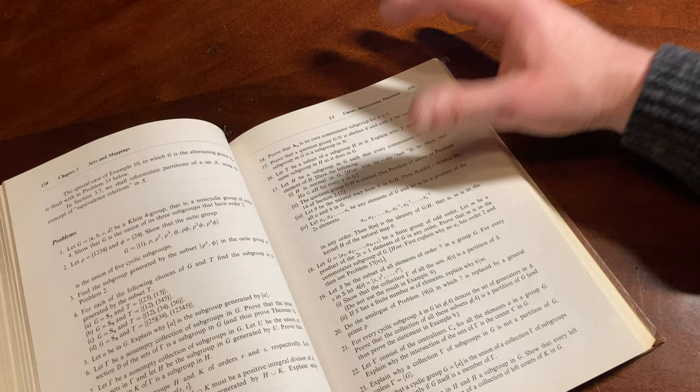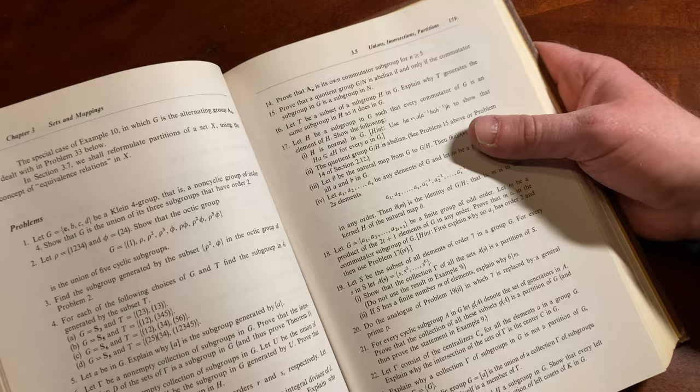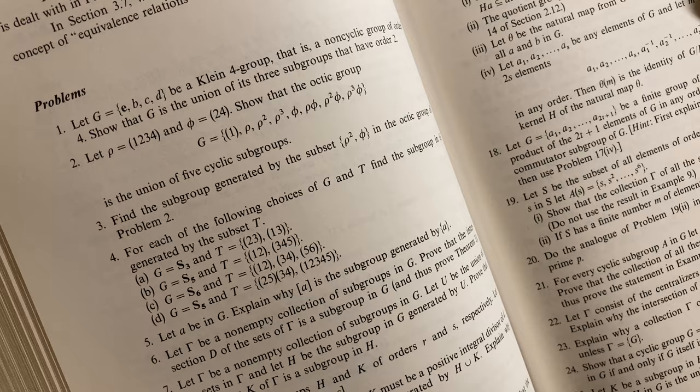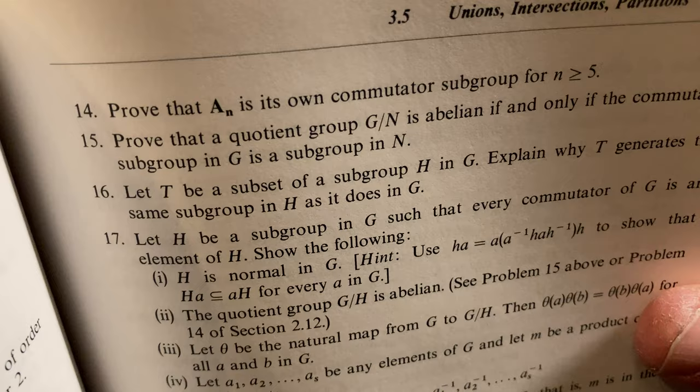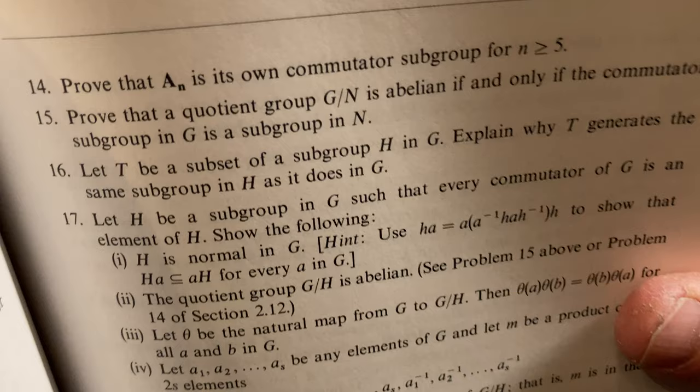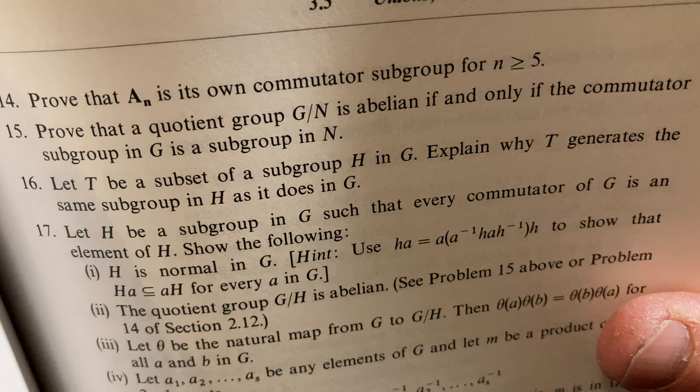Wow, look at all of these problems. There are so many problems here. Wow, this is great. It's like a problem goldmine. Look at this, all these exercises to do. Prove that the alternating group is its own commutator subgroup for n greater than or equal to 5. Prove that a quotient group G mod N is abelian if and only if the commutator subgroup in G is a subgroup in N. Cool.